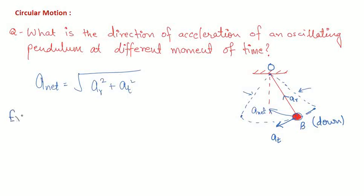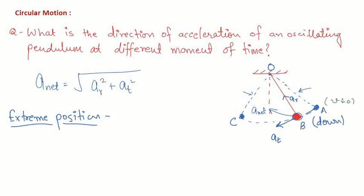Now, what happens at the extreme positions? At extreme position A or C, the instantaneous velocity of the particle is zero. So if the particle is at A, velocity is zero, which means the radial acceleration a_r is also zero. Therefore at extreme positions, a_net equals a_t — only tangential acceleration is present.